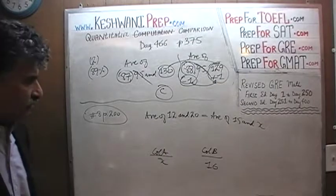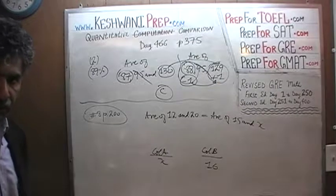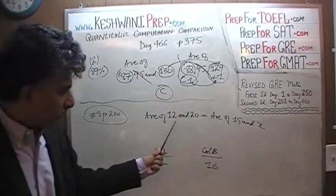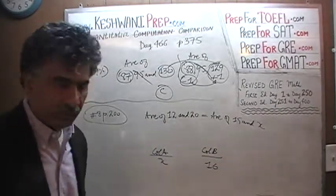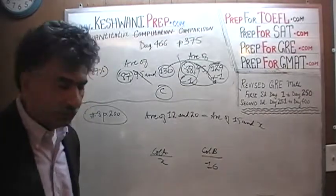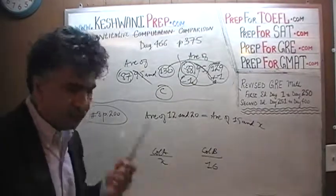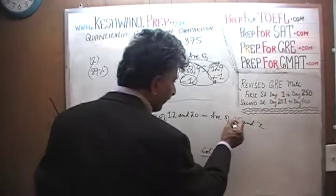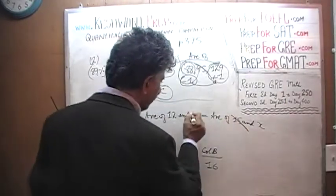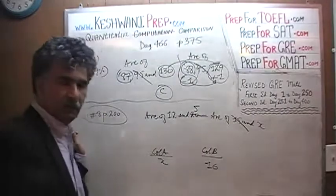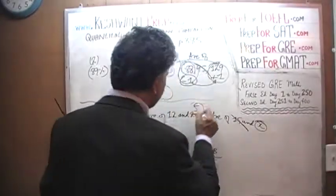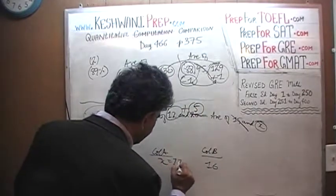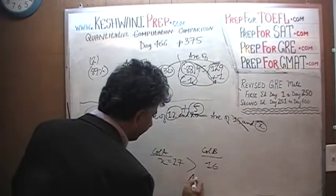Again, you could set it up in a very traditional way and do all the work, but it is not necessary. If the average of two numbers equals the average of two other numbers, then their sums must be equal. I see 15 here and 20 here — let's subtract 15 from both sides, so 20 becomes 5. X equals 5 plus 12, which is 17, and 17 is more than 16 — the answer is A.